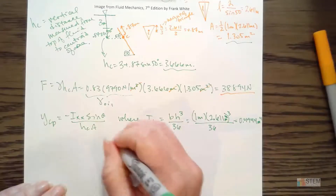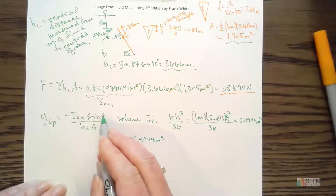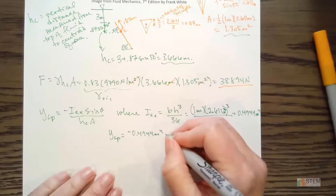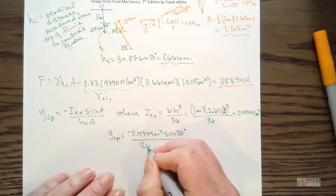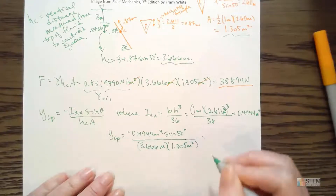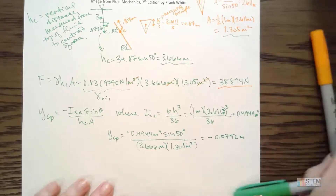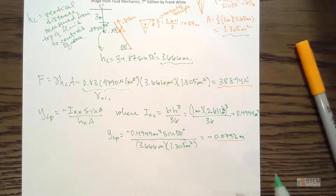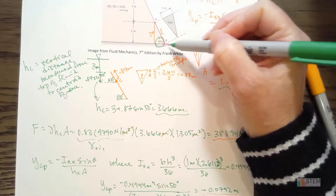Plugging everything into the Ycp equation: negative 0.4944 meters to the fourth times sine 50, over Hc of 3.666 times area of 1.305 meters squared. That gives Ycp equals negative 0.0792 meters. Now we have F and Ycp, so we can figure out what P needs to be for equilibrium — basically the force created by the oil must cancel with force P so the gate doesn't swing open.